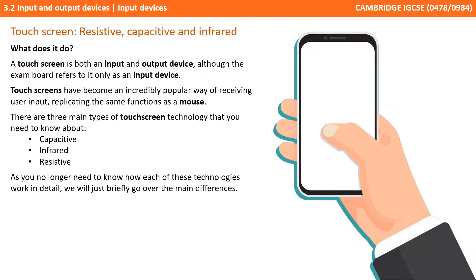Touch screens are both input and output devices, although as far as the exam board are concerned they'll refer to them as an input device. They've become an incredibly popular way of receiving user input, replicating the same functions as a mouse. There are three main types of touchscreen technology you need to know about: capacitive, infrared, and resistive. As you no longer need to know how each of these technologies work in detail, we'll just briefly go over the main differences.